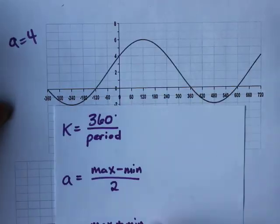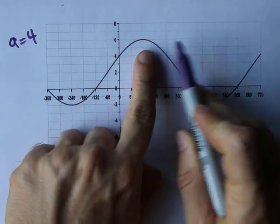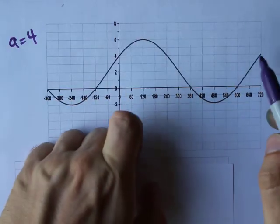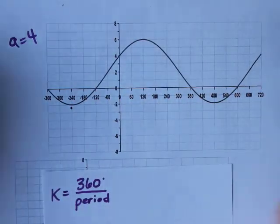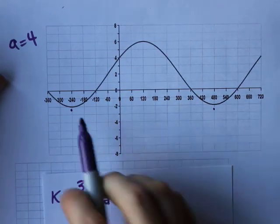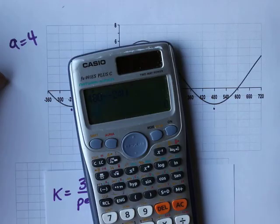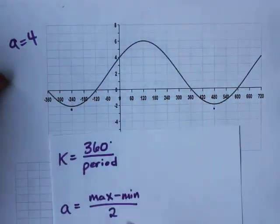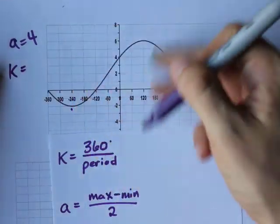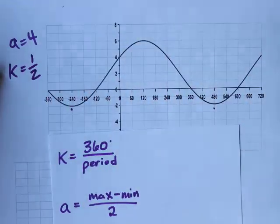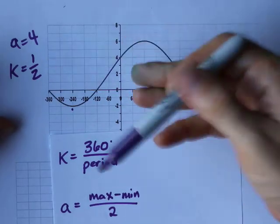For the K value, you're going to need the period of the function. I like finding the period by locating two maximums and seeing how far apart they are horizontally. This graph doesn't show a second maximum, so I'll use minimums instead. I've got one at negative 240 and another at positive 480. 480 minus negative 240 gives me 720 degrees. So K is 360 over 720, which is one half. The function is wider than a normal sine, so a fractional K makes sense.